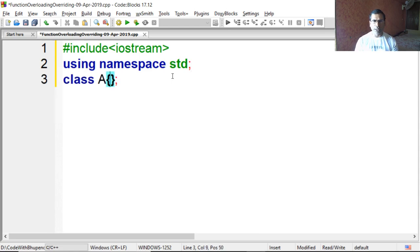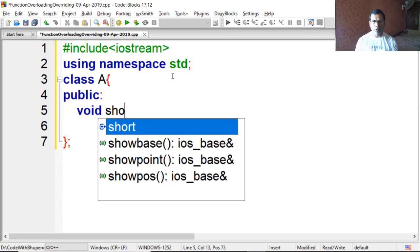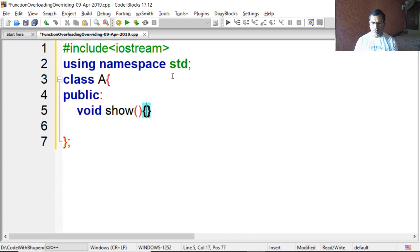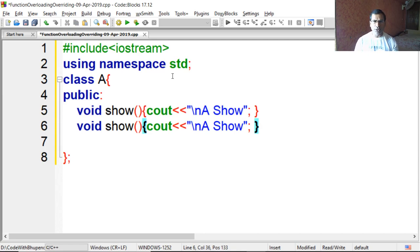So first we create class A with two functions. First is show, which says A show. Then you have to create one more function. So this is overloading.